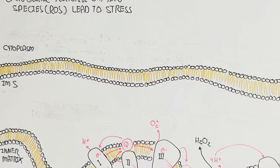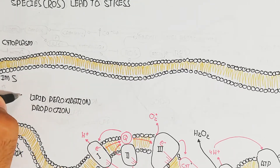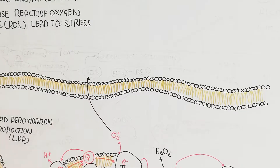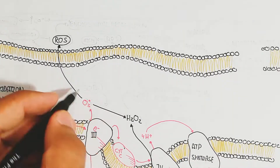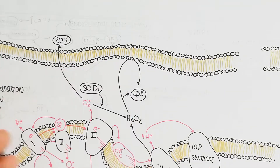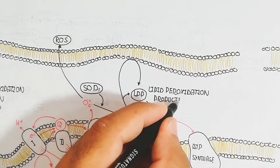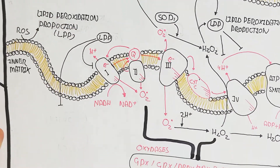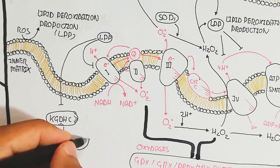Reactive oxygen species lead to lipid peroxidation of the plasma membrane, cell membrane, and organelle membranes. Reactive oxygen species also move into the cytoplasm where SOD1 converts superoxide into hydrogen peroxide, which is less toxic, but lipid peroxidation still occurs and inhibits the electron transport chain. Lipid peroxidation inhibits complex I, complex II.